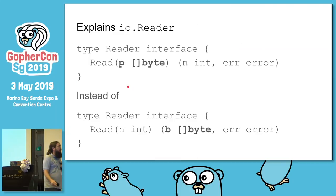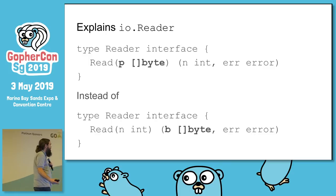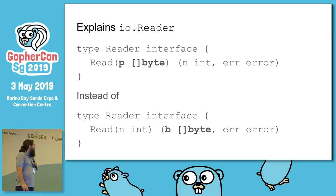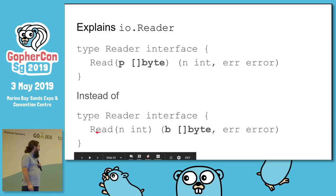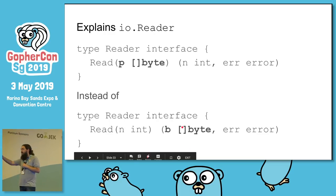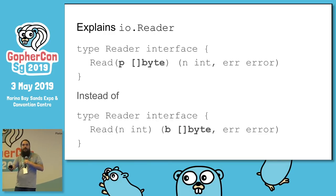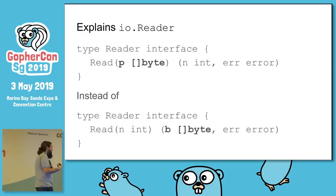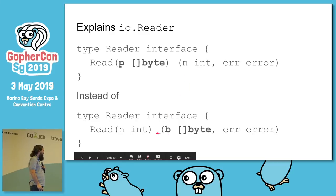This actually explains a question I had for a long time: why is the io.Reader interface designed the way it is? io.Reader is frequently implemented by files, network connections, byte buffers, and similar types. It was confusing to me why the read method doesn't just return the slice. Instead you make the slice yourself and pass it into the read method, and it returns a number telling you how much of your slice it filled. Once I understood the stack and heap, it made sense: if io.Reader worked the other way, we would have so much garbage on the heap it'd be a big mess.